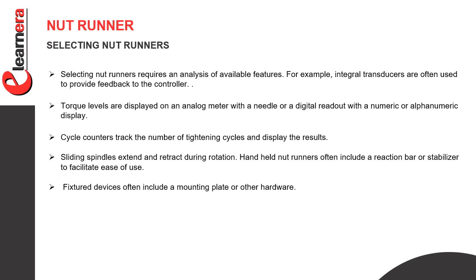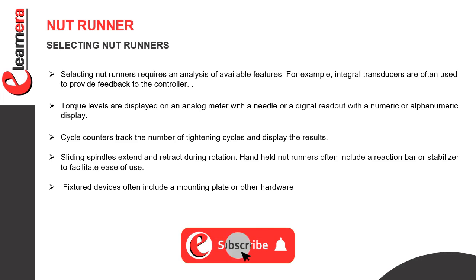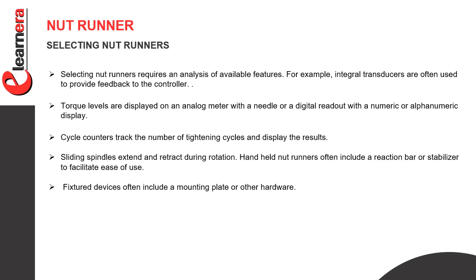Here we can see selecting nut runners. Selecting nut runners requires an analysis of available features. For example, integral transducers are often used to provide feedback to the controller. Torque levels are displayed on an analog meter with a needle, or a digital readout with a numeric or alphanumeric display. Cycle counters track the number of tightening cycles and display the results. Sliding spindles extend and retract during rotation. Handheld nut runners often include a reaction bar or stabilizer to facilitate ease of use.